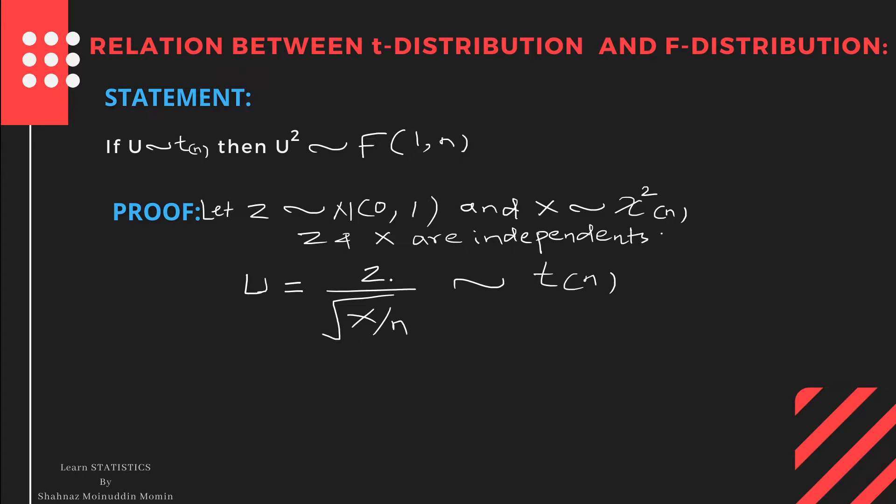The ratio of standard normal to the square root of chi-square variate divided by its degrees of freedom follows a T-distribution. This is the definition of T-variate, which we have learned in the T-distribution. If a student wants to learn the T-distribution, then click on the I button at the top right corner of the screen and the link of that playlist is also mentioned in the description below.